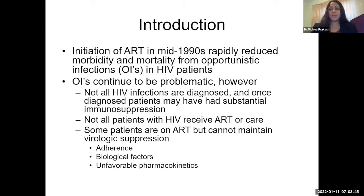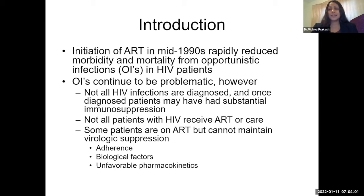I'll start with the initiation of ART, or antiretroviral therapy, in the mid-90s, which really reduced morbidity and mortality from opportunistic infections, or OIs, in HIV patients. The question is: this many years later, why do we continue to struggle with opportunistic infections? The problem is threefold.